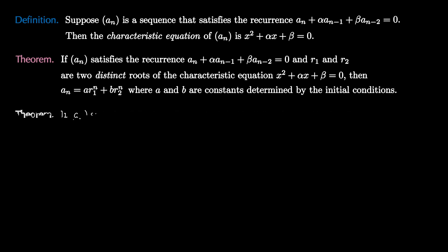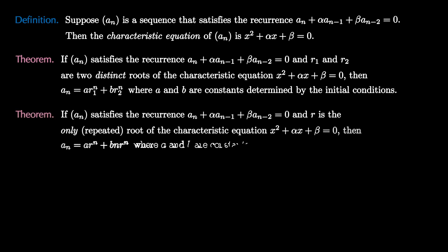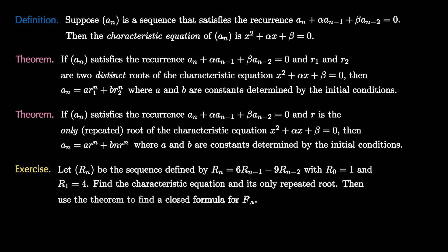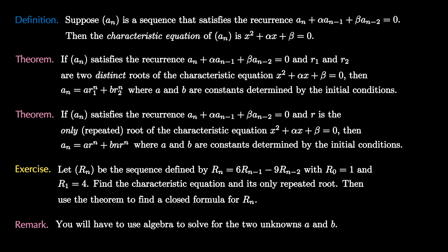There is a chance that the characteristic equation has two roots that are exactly the same. In the situation that the characteristic equation has only one repeated root r, then the formula for the sequence is a_n equals a times r to the n plus b times n times r to the n, where a and b are constants. Try this for yourself: suppose r_n equals 6·r_{n-1} minus 9·r_{n-2} with r0 equals 1 and r1 equals 4. Find the characteristic equation, its only repeated root, and use the theorem to find a closed formula for r sub n.